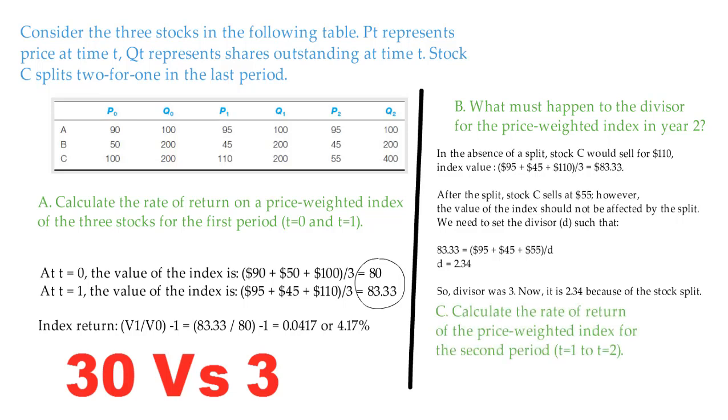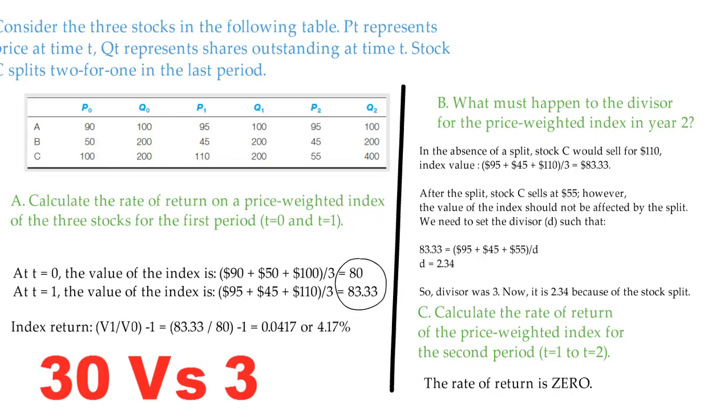Number 3. Calculate the rate of return of the price-weighted index for the second period, which is t equal 1 to t equal 2. The rate of return is 0. The value of the index remains unchanged since the return on each stock separately equals 0. Thank you.